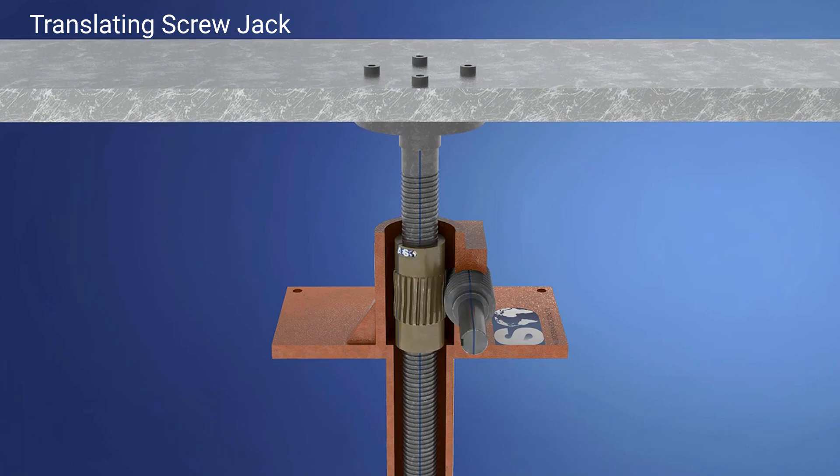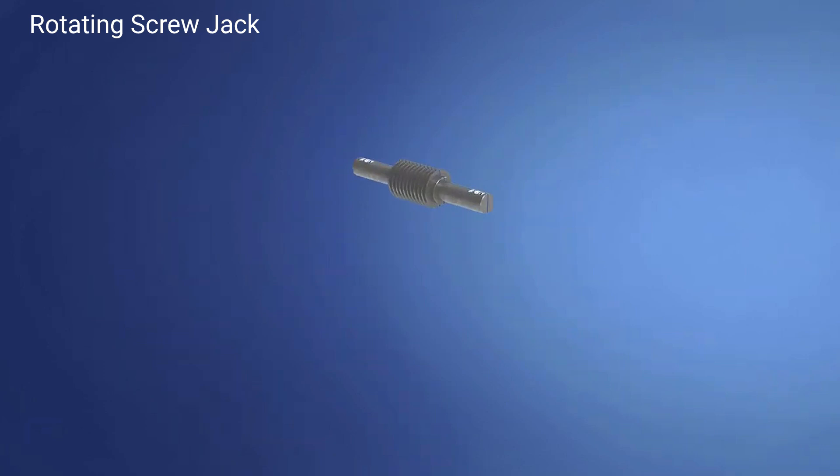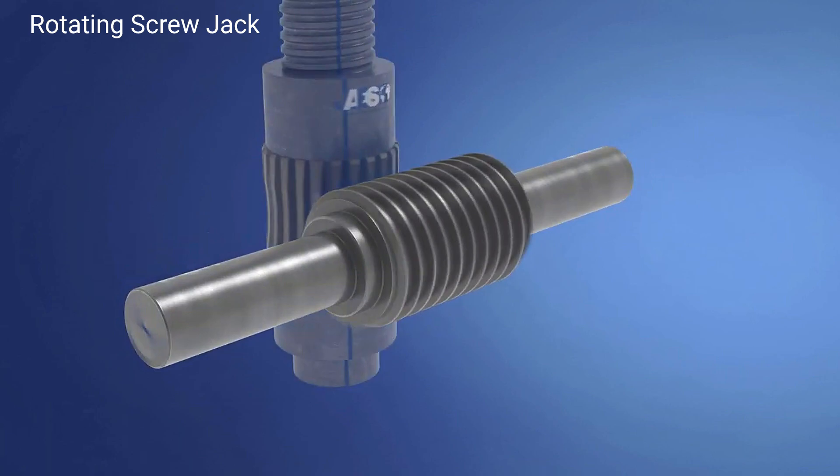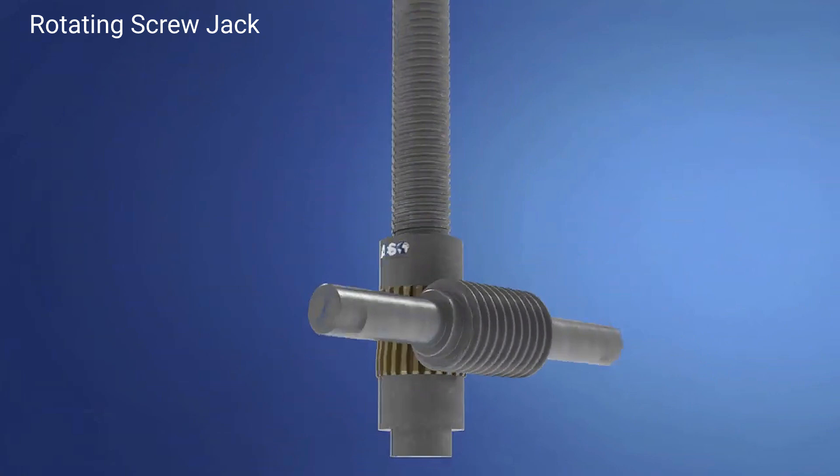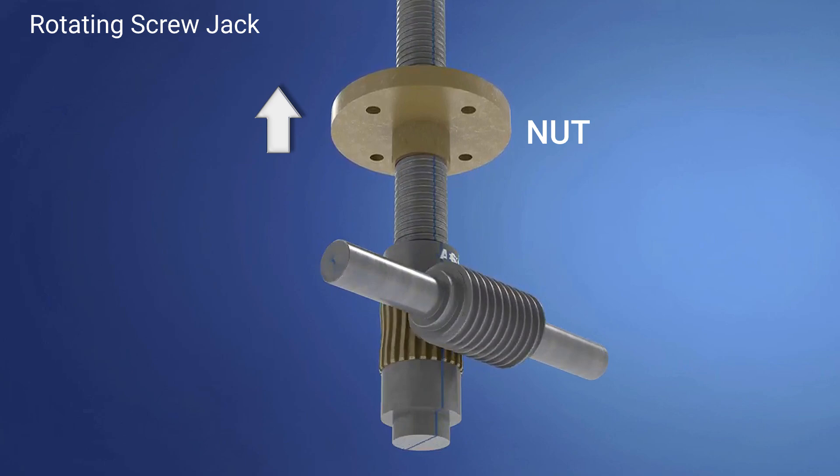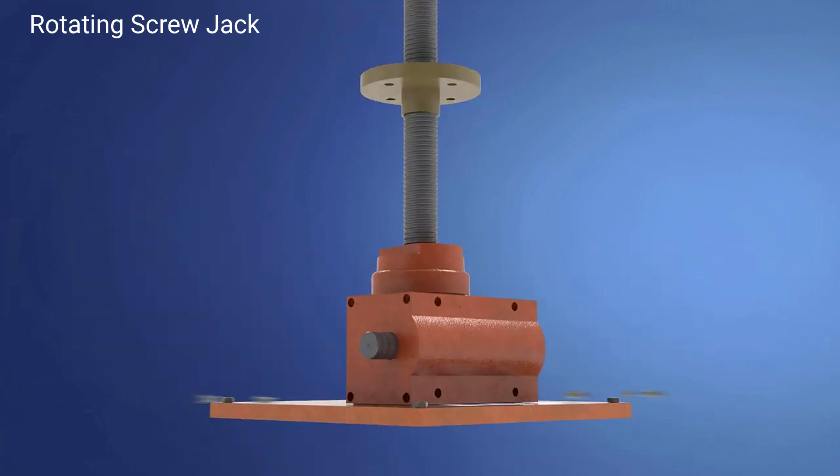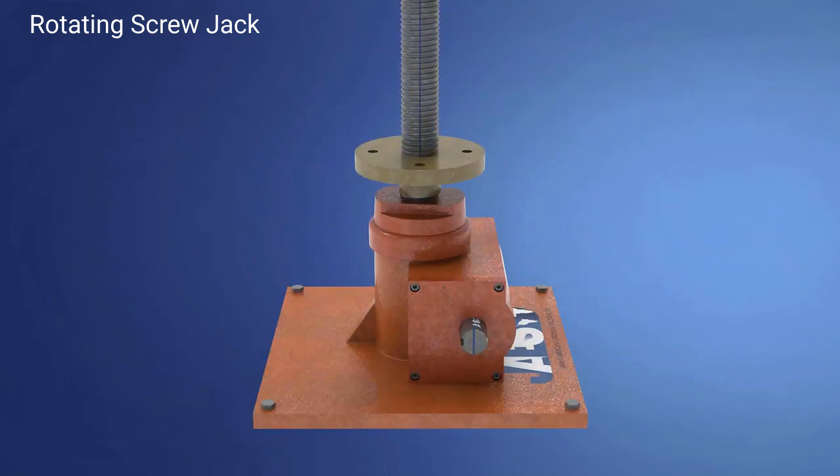In the rotating screw jacks, when the worm shaft is rotated, the lead screw rotates in the body of the screw jack at the same rate as the worm gear. When the lead screw is rotating, a nut translates through it providing linear motion. In this case, it is necessary to have free space only on one side of the jack. The nut must be fixed to a structure that prevents it from rotating with the screw.